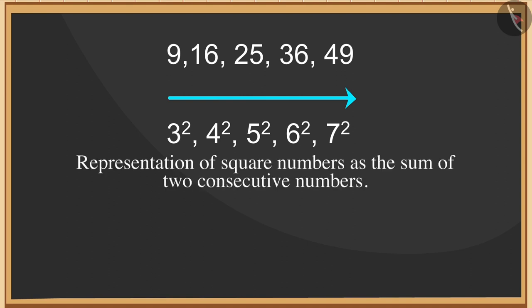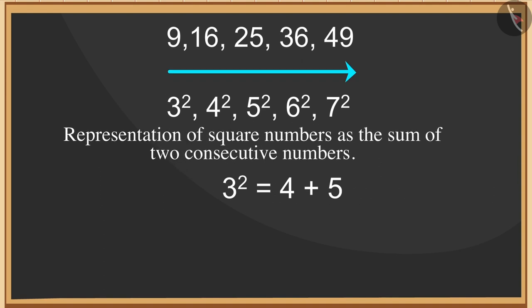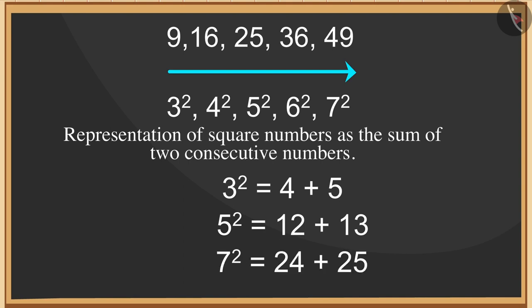Let us express these numbers as a sum of two consecutive numbers. We can express the square of three as the sum of numbers five and four. We can write the square of five as the sum of numbers twelve and thirteen, and the square of seven as the sum of numbers twenty-four and twenty-five.